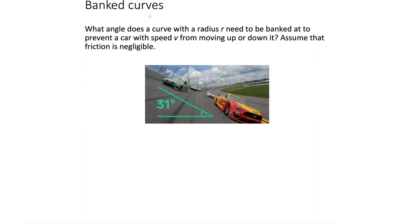We're now going to look at banked curves. Have you ever wondered why on racing car tracks the curves are often banked? This question asks what angle a curve with radius r needs to be banked at to prevent a car with speed v from moving up or down, assuming friction is negligible. Here's the curve banked at angle theta, with the car heading out of the screen toward us. The weight force mg pulls it down and the normal force pushes perpendicular to the track.